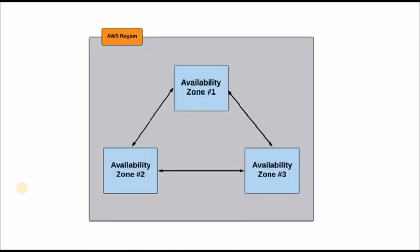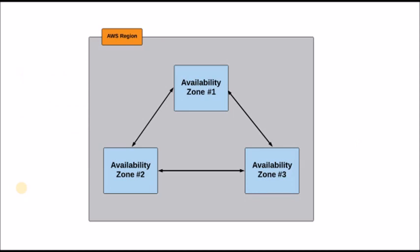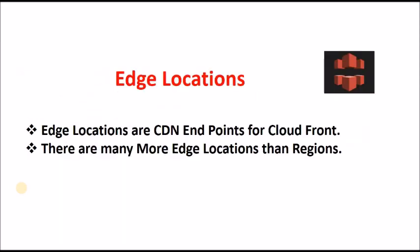Within a region, there are availability zones. Availability zones are physical data centers, and they are isolated from each other. However, each availability zone has a backup in the others, so it is designed for high availability. Multiple availability zones in each region provide redundancy, which means your wait time will be less and the availability of your AWS resources will be very high.